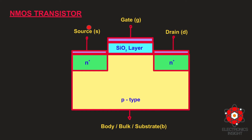Source and drain are physically equivalent and interchangeable. The plus symbol in the source and drain indicates that they are heavily doped regions. The body is typically grounded. The gate is the control input that controls the flow of current between source and drain. A PMOS transistor is just the opposite, consisting of a P-type source and drain and an N-type body. In CMOS technology, which uses both types of transistors, the body could be either N-type or P-type.